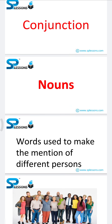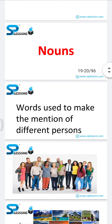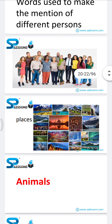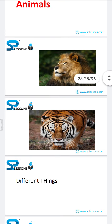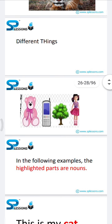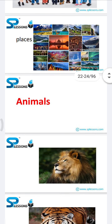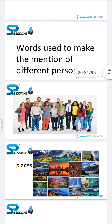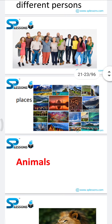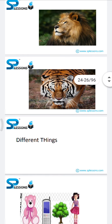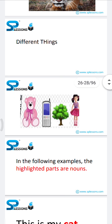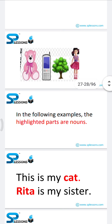The first one is nouns. Nouns are words used to make mention of different persons, places, animals, and things. Generally, we use nouns to identify words referring to persons' names, places' names, animals' names, and things' names.